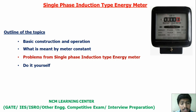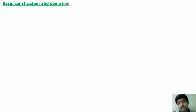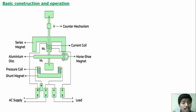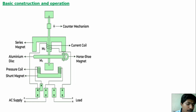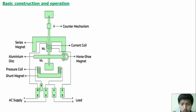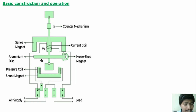First, the basic construction and operations. We know that energy means power into time, and power means voltage into current. For measurement of energy, we have to sense voltage, current, and power factor. In this arrangement, it will have two coils. One is the current coil — it will sense the current value. Another one is the pressure coil — it will sense the voltage.